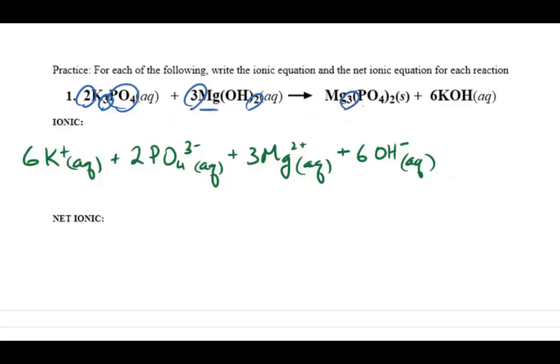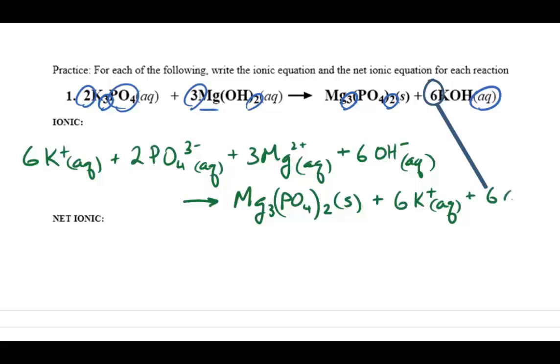On the product side, three magnesium ions and two phosphate ions have formed the precipitate solid magnesium phosphate. While the potassium hydroxide remains aqueous, giving us six aqueous potassium ions and six aqueous hydroxide ions on the product side.